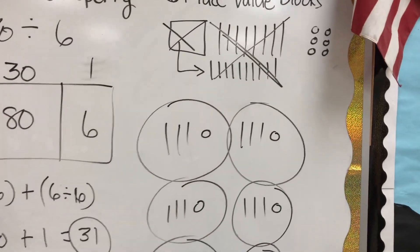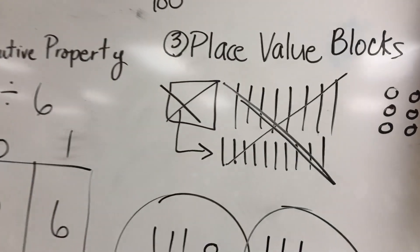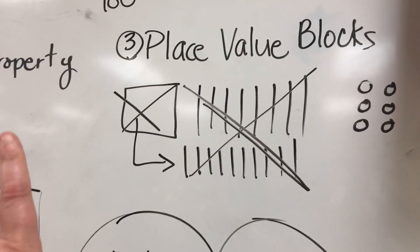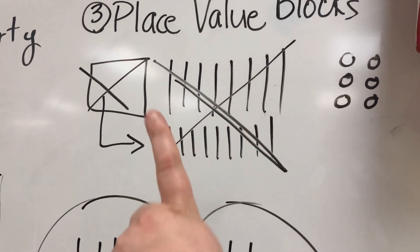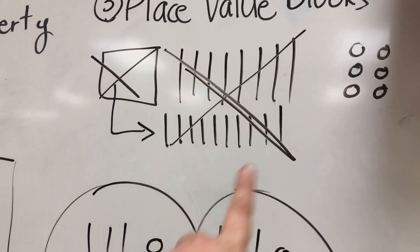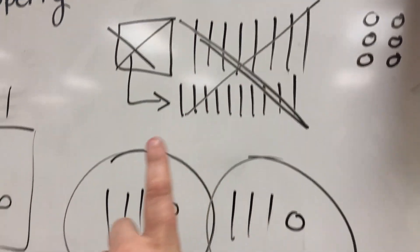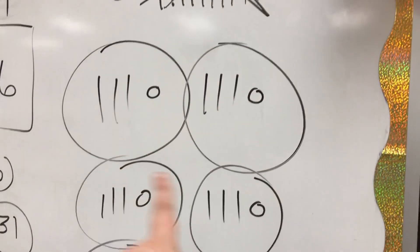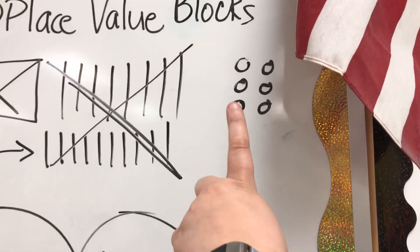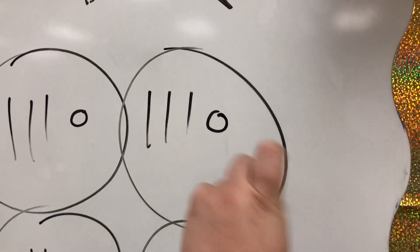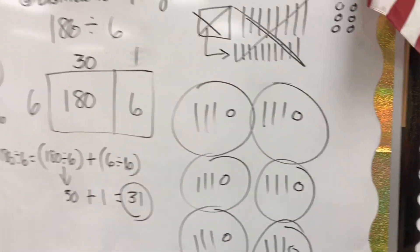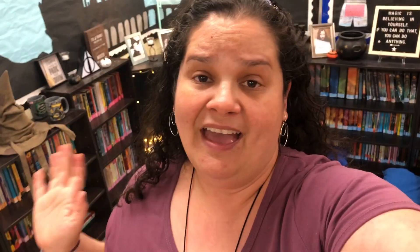I also showed them using place value blocks that students can easily draw. For 186, we regroup the hundreds into tens, giving 18 tens. We divide 18 tens into 6 groups — 3 in each group — and 6 ones into 6 groups, 1 in each, giving 31 total. Those were the strategies we went over today. After math we ended the day with writing, going back to our good ideas opinion essay.